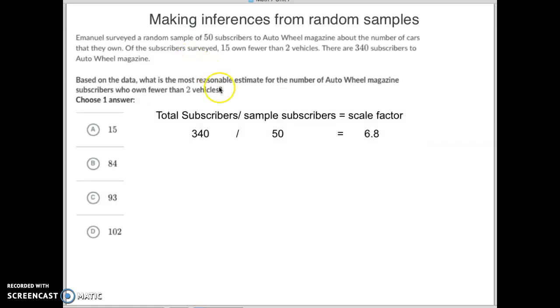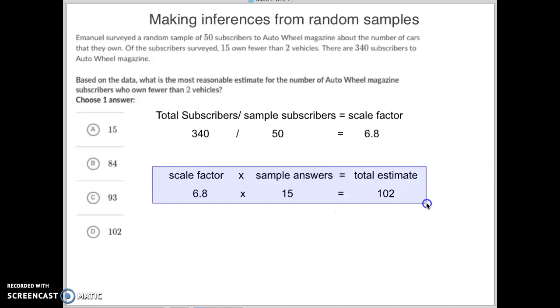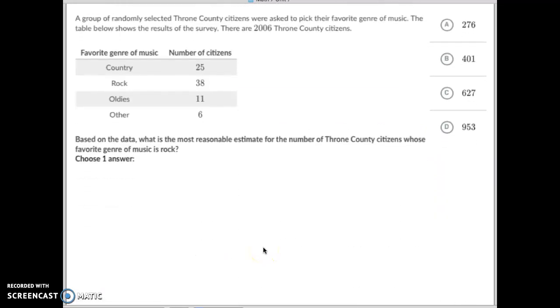So, in this case, we want to know how many people own fewer than two vehicles. Well, the survey said 15 of them did. So, what we're going to do is take our scale factor of 6.8 and multiply that by the 15 people that had two or fewer answers. When you do that, we get our total estimate to be about 102 people who subscribe to this have two or fewer vehicles. That's how you do it. Let's do one more to make sure we understand.